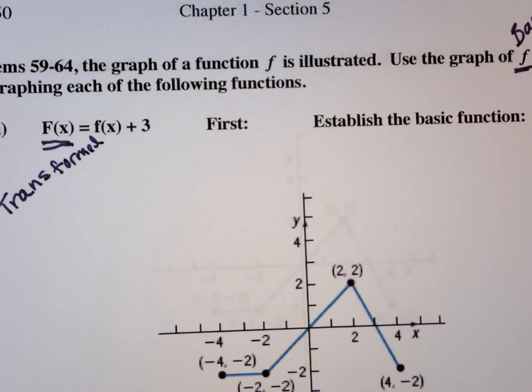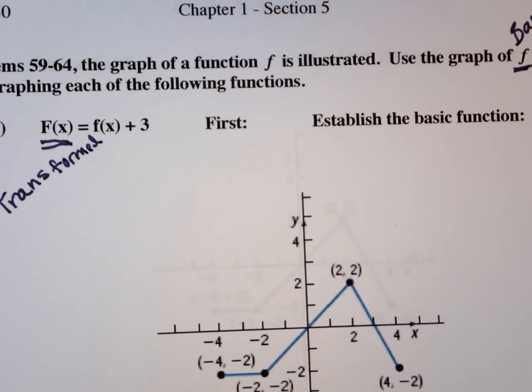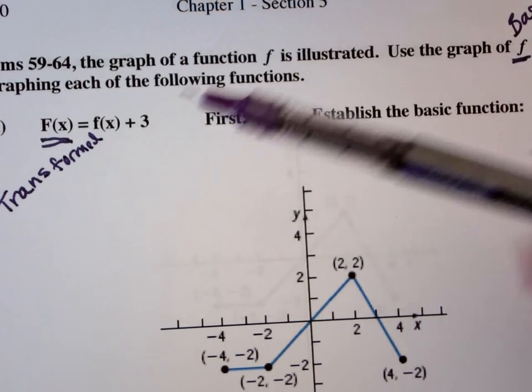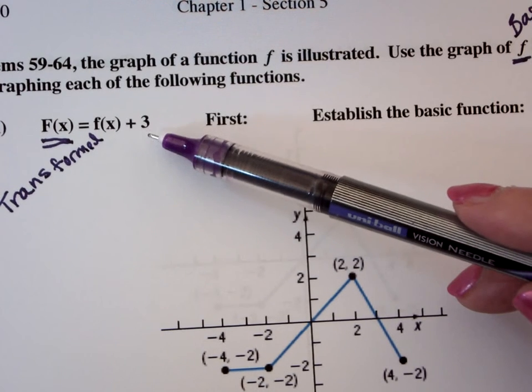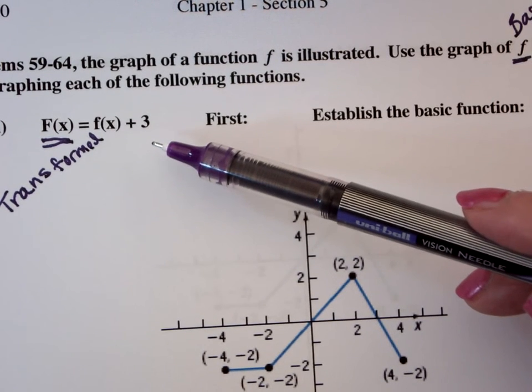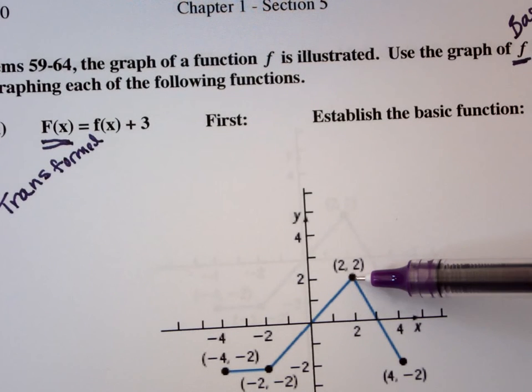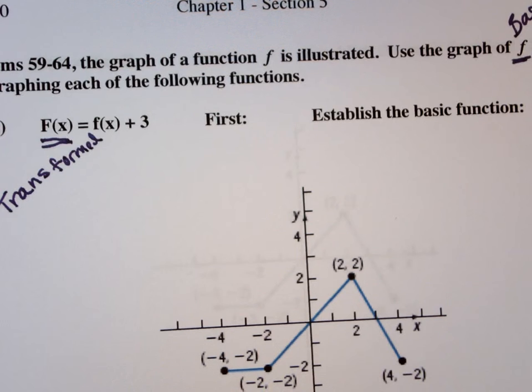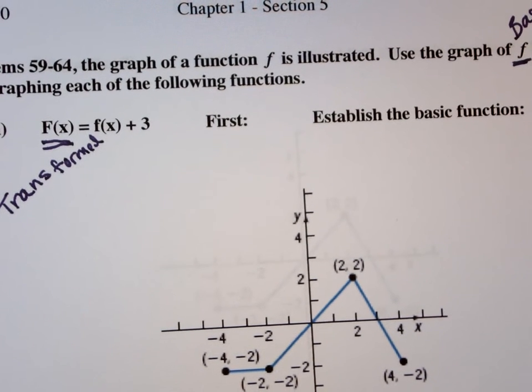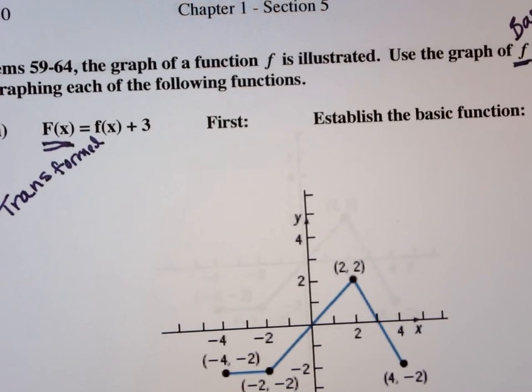Now, by the way, you don't have to set up a t-bar chart for some of you to do the easier transformations. Because what does this tell me to do? To go up three. So could I take each coordinate point and move each coordinate point up three? Or left or right? I mean, that would be an easy thing to do. So you wouldn't have to do a t-bar chart. But we're going to do it anyway.